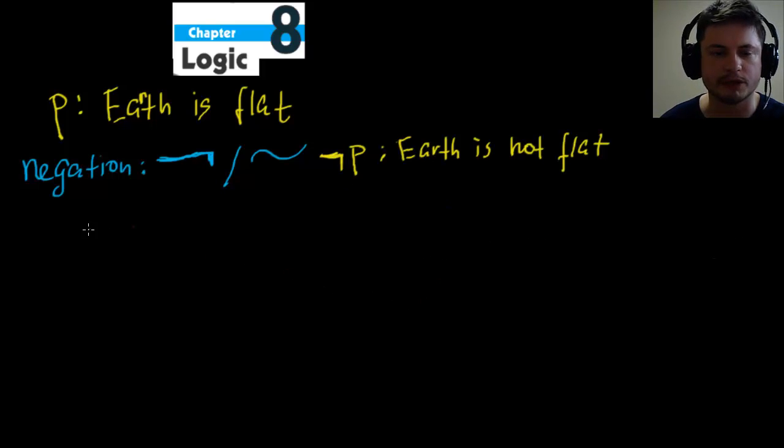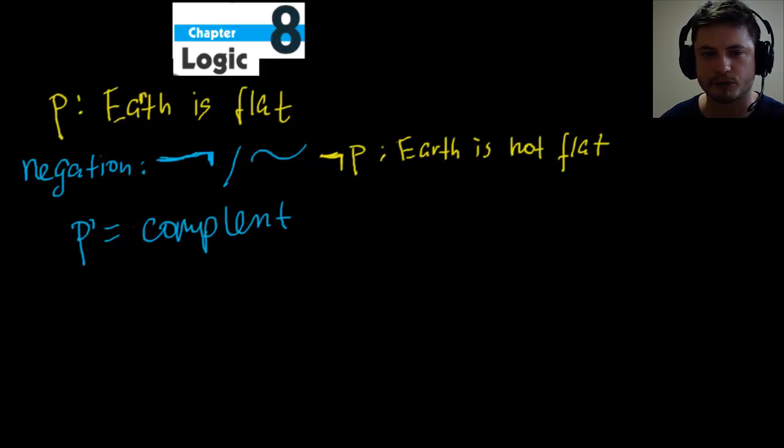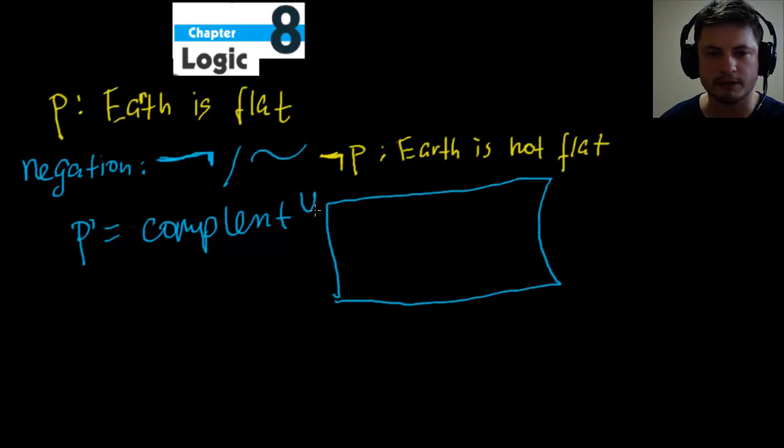And we've actually done this before with Venn diagrams here. And essentially negation was P prime. This was called a complement. So this is what we're looking for. We're looking for a complement of our first proposition. So if I were to redraw this as a Venn diagram with a universal set right here, this would be a circle in the middle called P. And then this over here would be P prime. So this is our P proposition. And this is our not P. So essentially, proposition and negation are kind of like Venn diagrams, but in sentence formats.